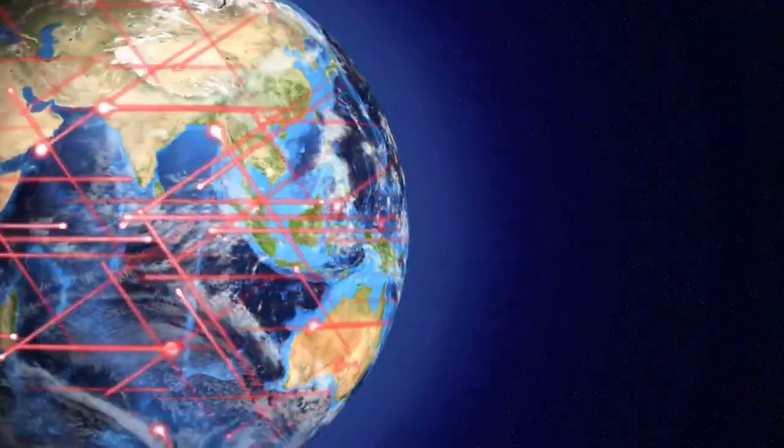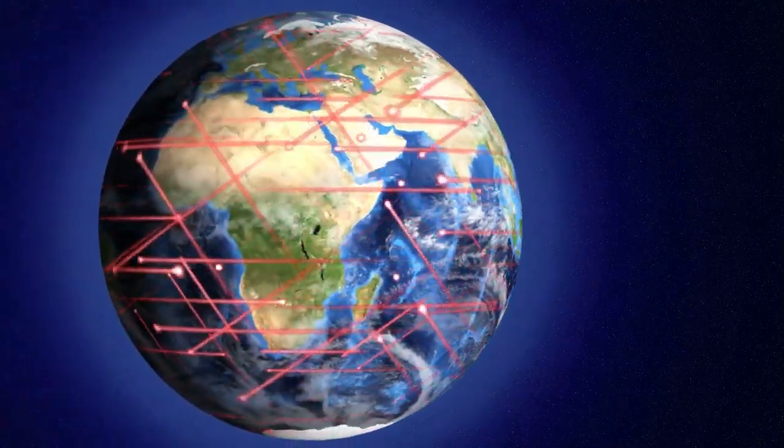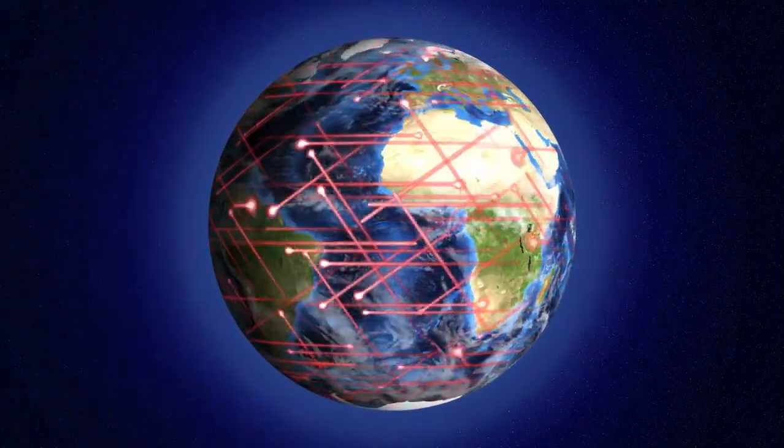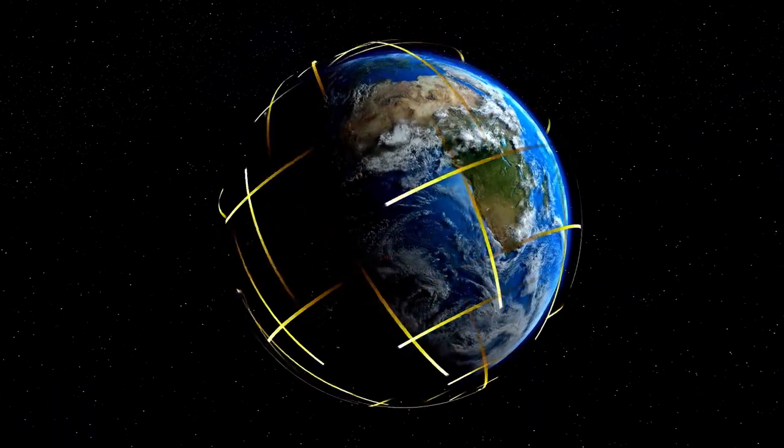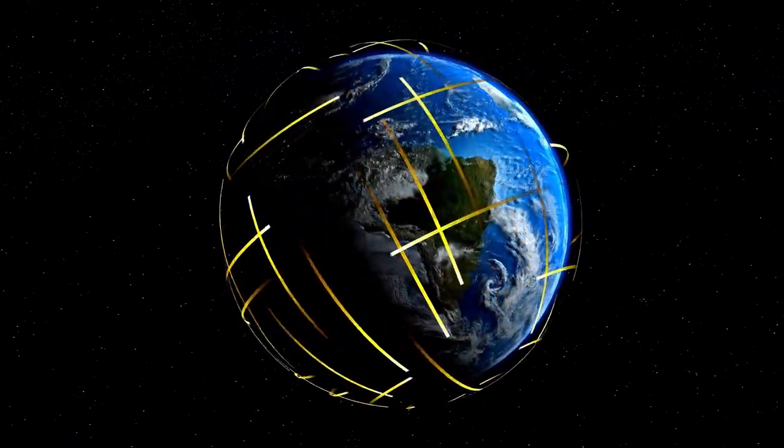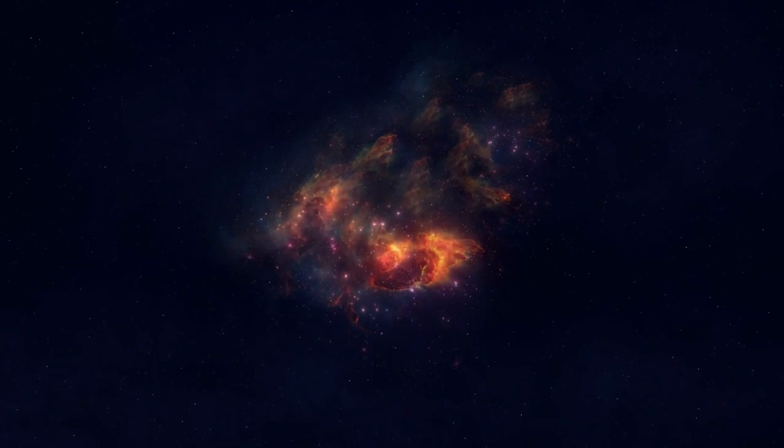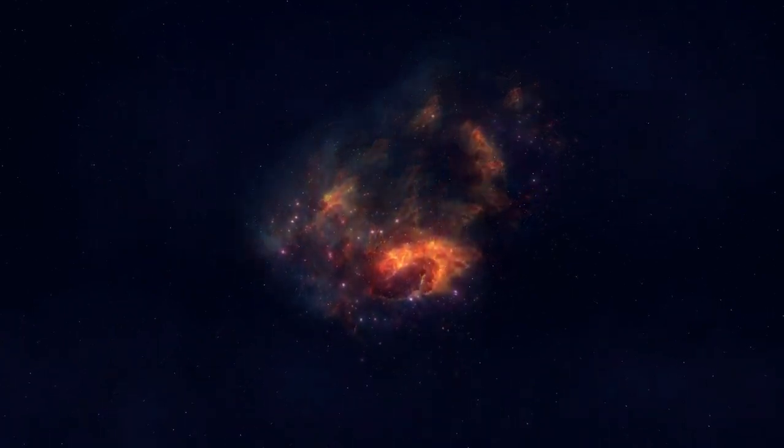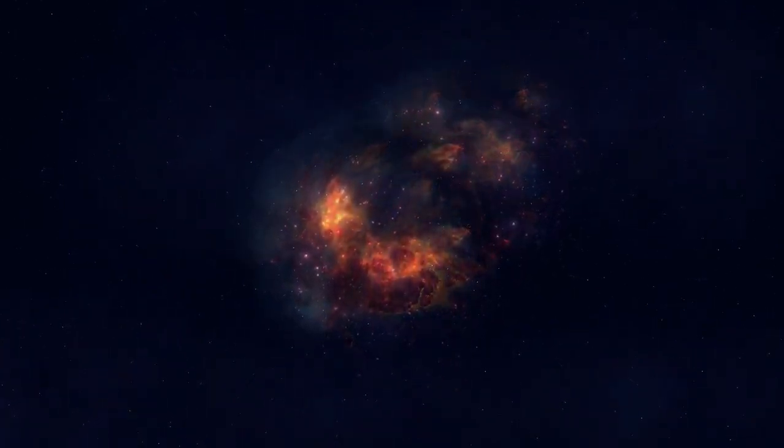The Earth's magnetic field and atmosphere provide a protective shield against most of the harmful radiation from space. However, a nearby supernova could potentially disrupt this delicate balance, leading to increased levels of radiation reaching the surface. This could have significant consequences for human health and the environment.